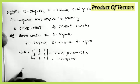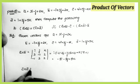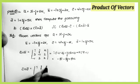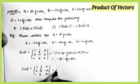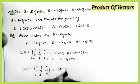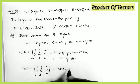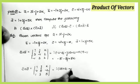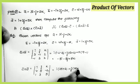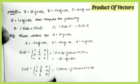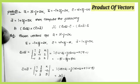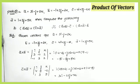Now finding c×d. With c = (4, 5, −2) and d = (1, 3, 5): i(25 − (−6)) = 31; −j(20 − (−2)) = −22; k(12 − 5) = 7. Therefore c×d = 31i − 22j + 7k.